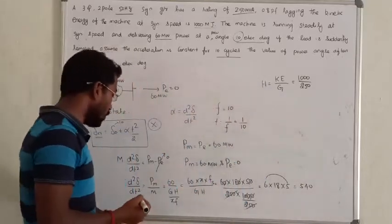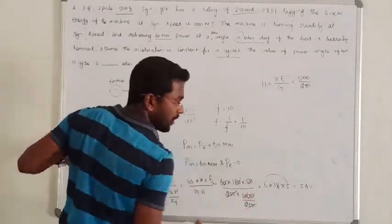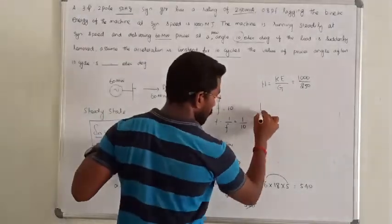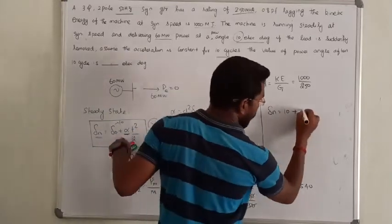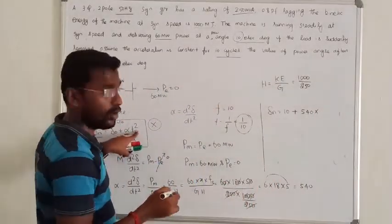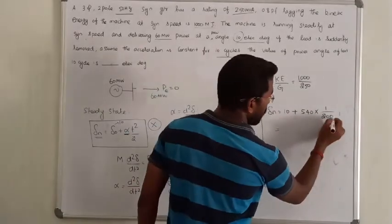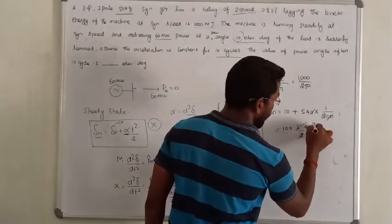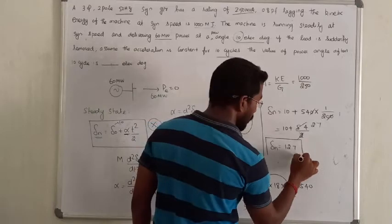Now we know alpha is 540 degrees per second squared. Substituting into the motion equation: δ_new equals δ_old plus alpha times t² divided by 2, which is 10 plus 540 times (1/5)² divided by 2 — wait, using t = 1/5: 540 times (0.04) divided by 2 equals 10 plus 2.7, giving 12.7 electrical degrees. So the correct answer is 12.7 electrical degrees.